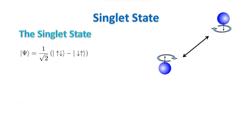We want to talk a bit about the singlet state, which is a very important state for many reasons. First of all, the singlet state is the lowest energy state for the system. When two particles get close enough, after a while they interact and go to the singlet state. This is the way systems get entangled — they just interact with each other.